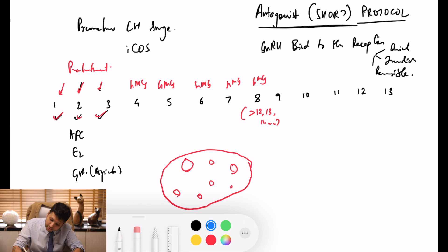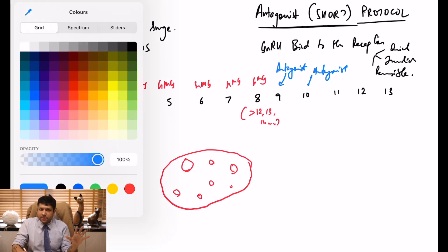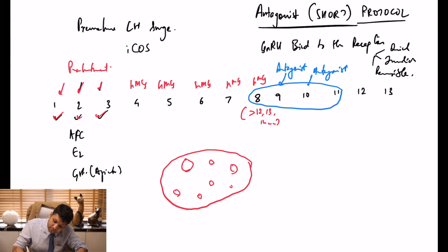Usually it's done when the lead follicle is around 12 to 14 millimeters, and antagonist might be needed for 2 or 3 days. We believe for practical purposes it's very good to follow a fixed protocol, meaning irrespective of the lead follicle size, you have a fixed day for antagonist. We typically keep it on the 5th or 6th day of stimulation. That nullifies any risk of premature LH surge.